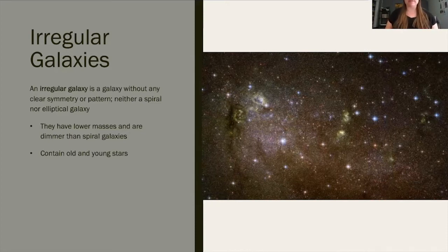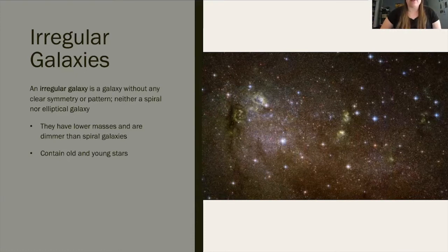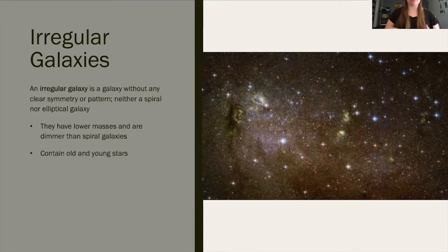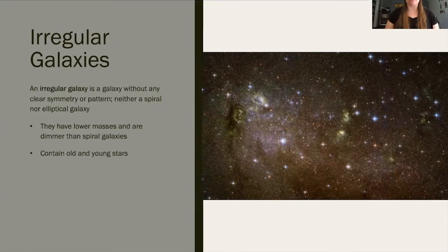Irregular galaxies do create new stars — a lot of stars have been known to form in those clouds. They are filled with gas, dust, and dark matter, but they're not all within an orbiting shape; they're just a cloud. This whole picture here is an irregular galaxy — you can see all the different types of stars, the big red ones and the small cooler ones.